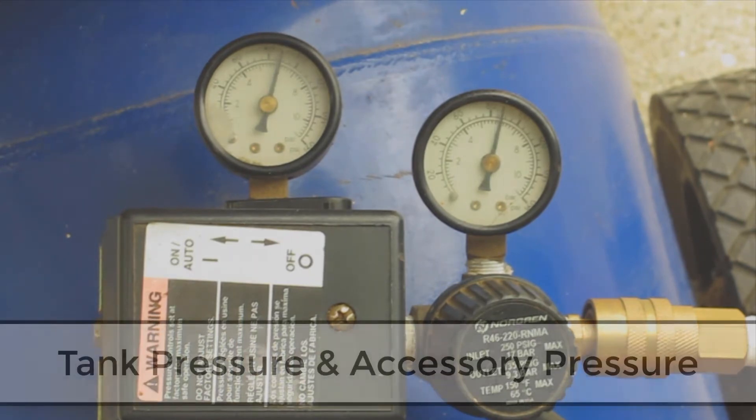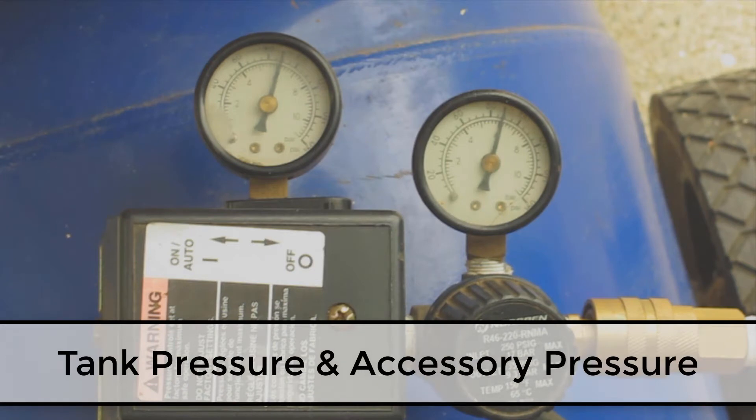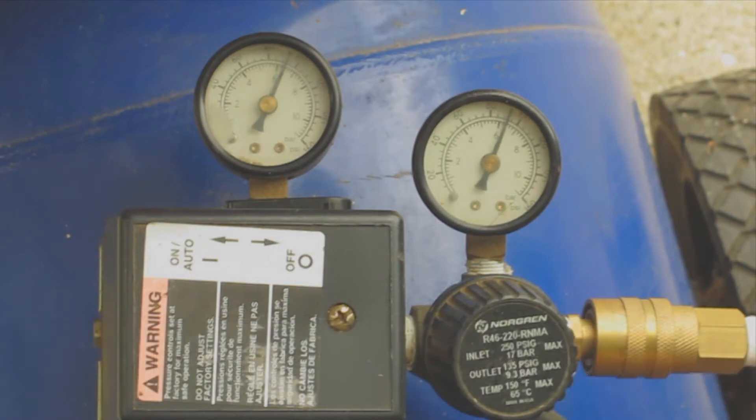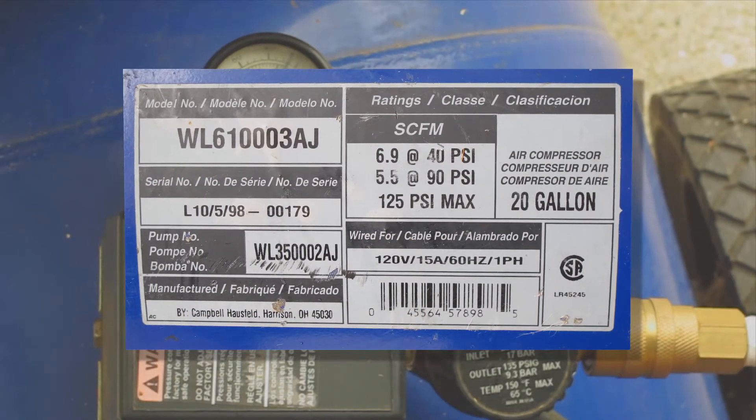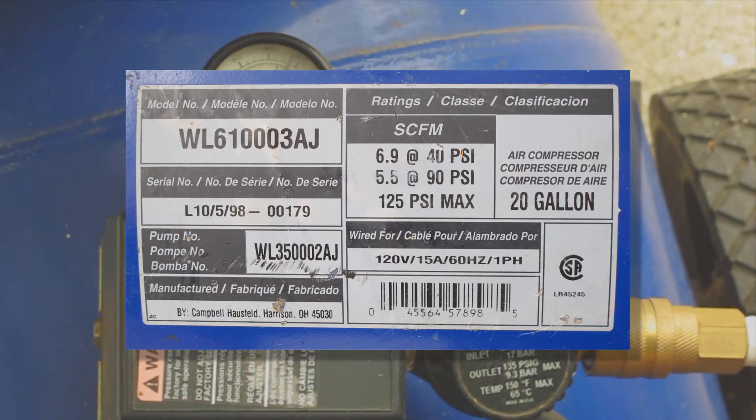The gauge on the left is actually the pressure inside the tank in PSI. The gauge on the right is the accessory gauge. The tank that I have right now typically charges up to around 120-125 PSI. And that's not typically what I want going out to my accessories or my tools or equipment, especially not my vacs.